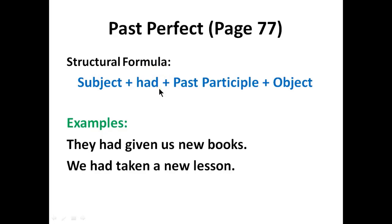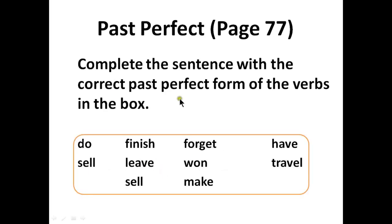This is the structural formula of an affirmative sentence of past perfect tense. If you want a negative expression, you can use 'had not' or 'hadn't'. In case you need an interrogative expression, you must bring the helping verb 'had' to the beginning — then you will say 'Had they given us?' or 'Had we taken?'